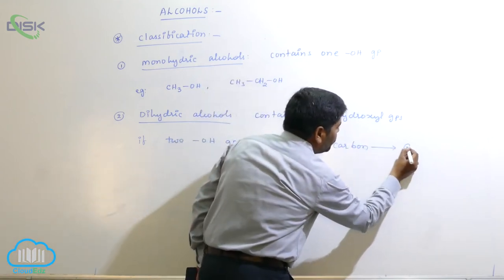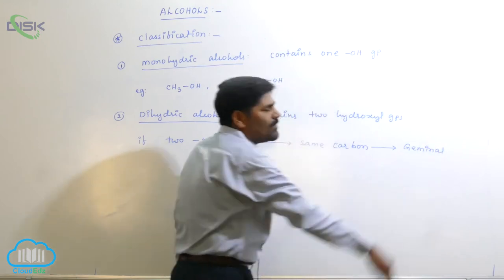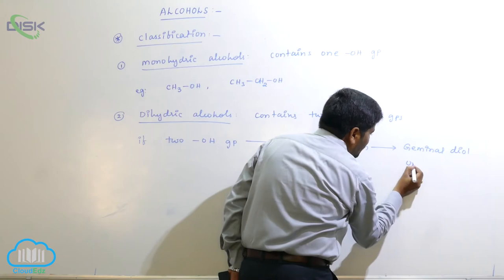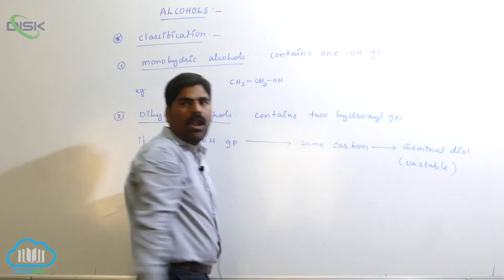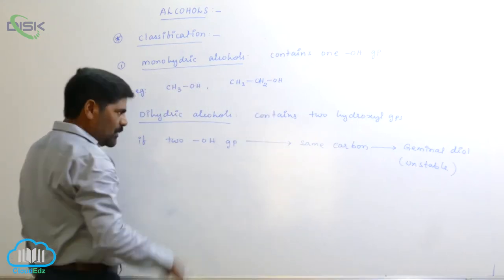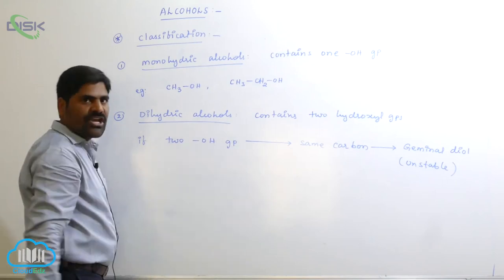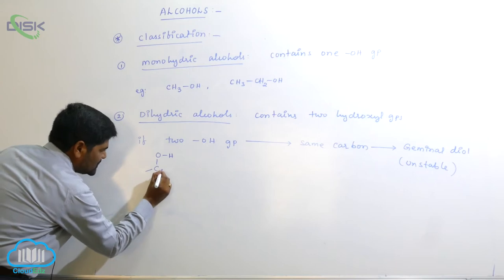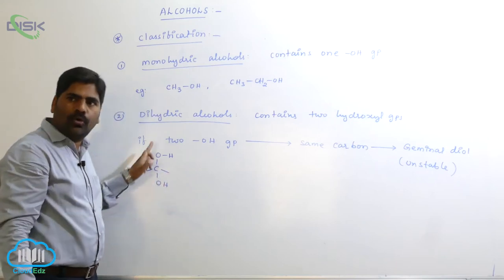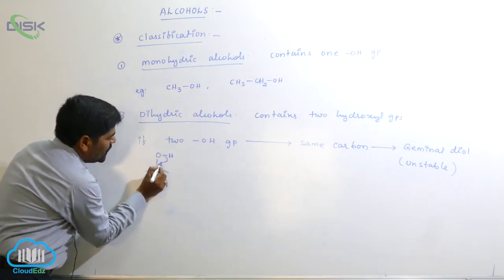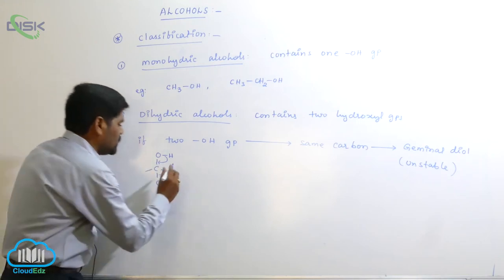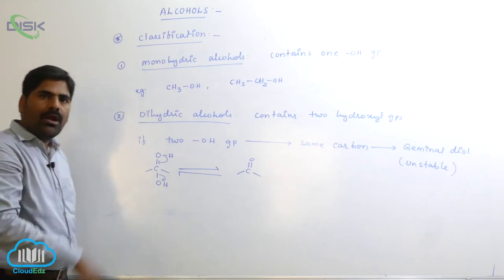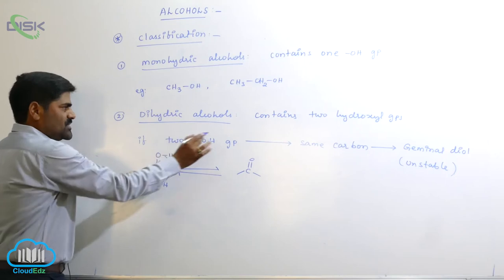If two hydroxyl groups are present on the same carbon, they are known as geminal dioles. Geminal dioles are generally unstable. Because a single carbon contains two OH groups, loss of a water molecule takes place immediately, and it converts into a C double bond.